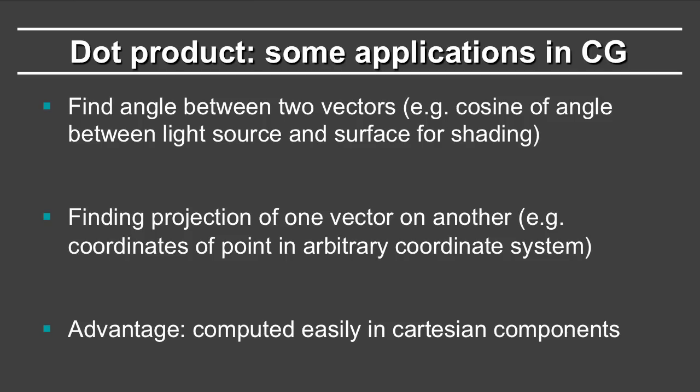Let's look at some applications in computer graphics. The obvious one is to find the angle between two vectors. I already talked about it. The cosine of the angle between the light source and the surface is very important for shading. It's also important to find the projection of one vector on another. Example, when you want the coordinates of a point in a new coordinate system. And the advantage of the dot product is that it is easily computed in Cartesian coordinates.